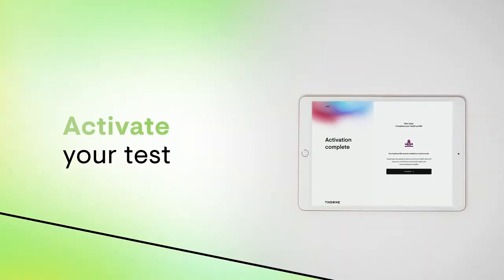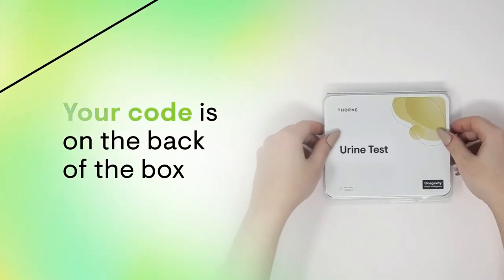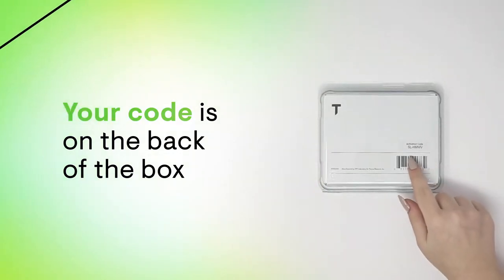Before starting, it's important you activate your test kit at thorne.com/activate. You can find the six-digit activation code on the back of your plastic test box.